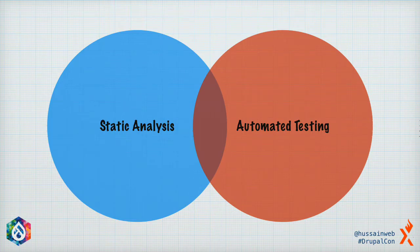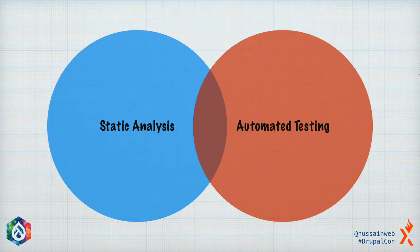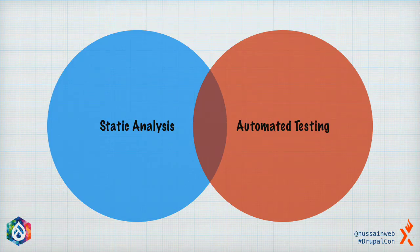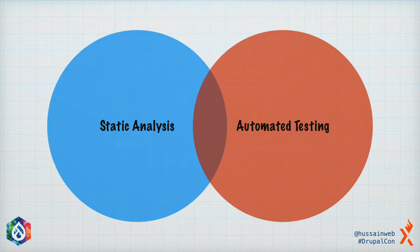Think about the code you write in terms of objects passing around messages. If all of your code can be represented as objects, and your business flow can flow through as communication between various objects, then there is very little that can go wrong from the business logic point of view. All of those cases can be covered by automated testing and static analysis.